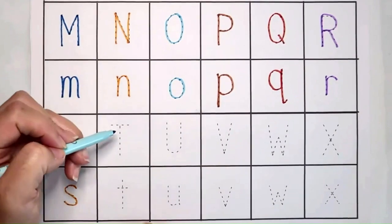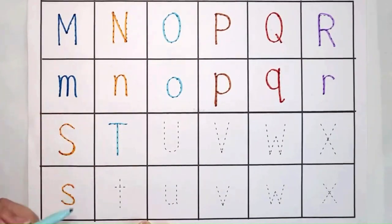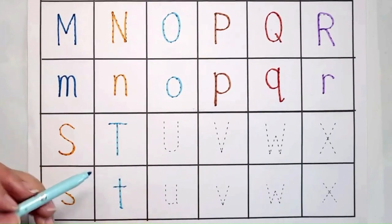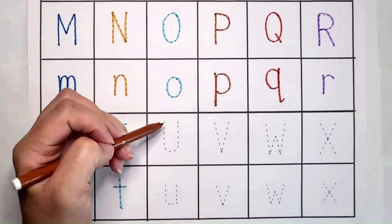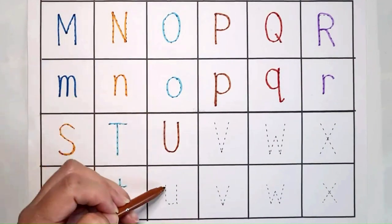T. T is for Table, T T Table T. U. U is for Umbrella, U U.